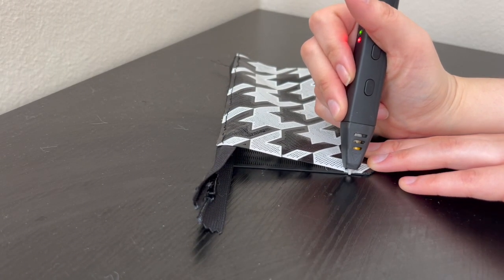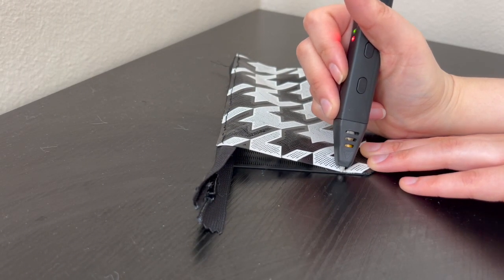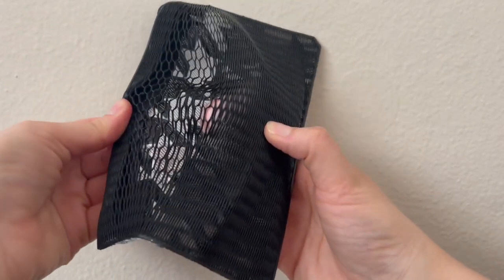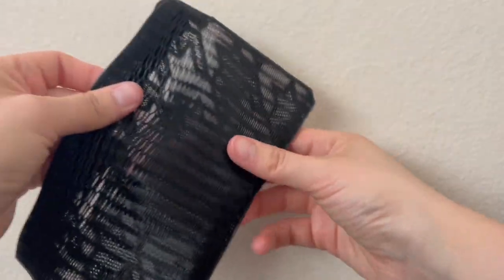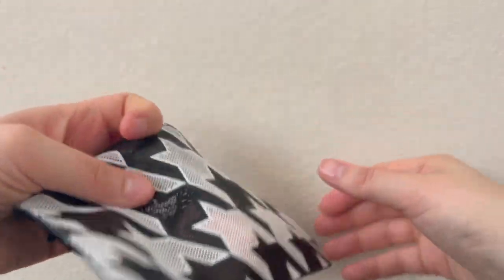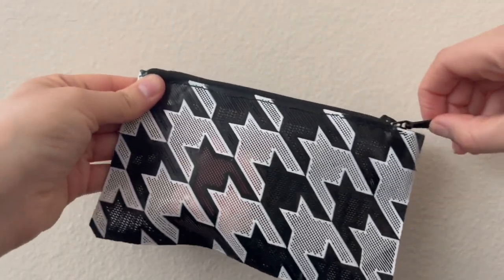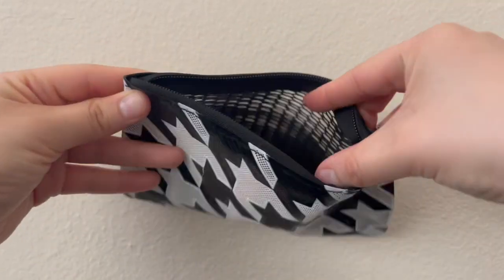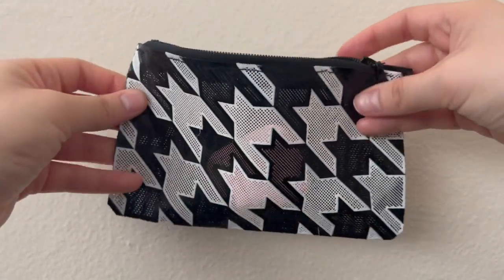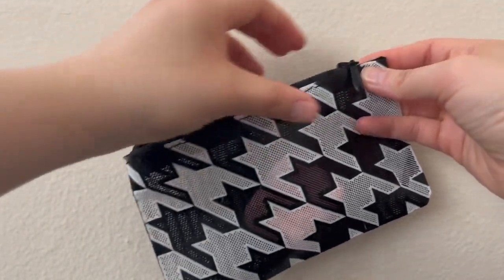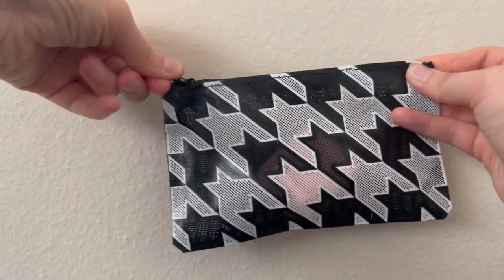And so I took this houndstooth swatch, and the previous swatch that I made that was kind of stretchy, and fused these together with a 3D pen to make a small little wallet purse. I really like how it came out, and I think this has a lot of potential for creating larger bags, or maybe the same dress that I made, just in a smarter way.